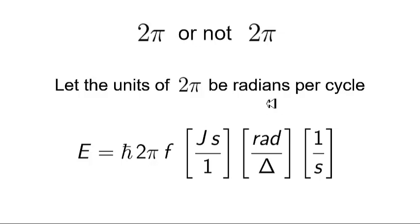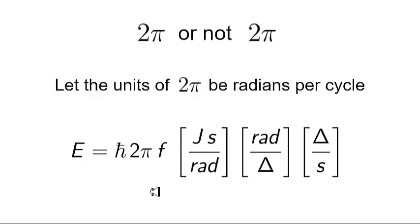But when we mathematically let the units of 2π be radians per cycle, we have to write radians per cycle in the unit section. Now the unit section is no longer balanced — the 1s cancel and the seconds cancel, but we still have the radian and cycle terms to deal with. So the radian goes in one position and the cycle goes in another, giving us a beautifully balanced unit section. We now have all the information in the unit section, including a unit for the angle and a unit for one complete cycle. This affects the interpretation of the equations.